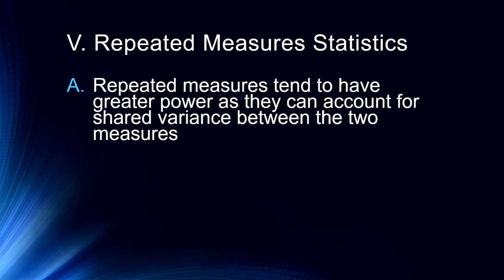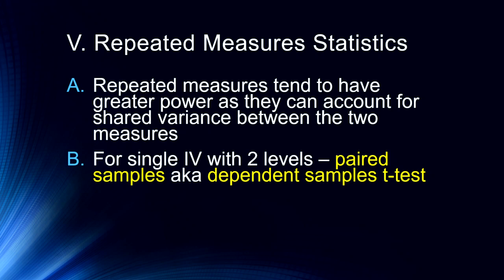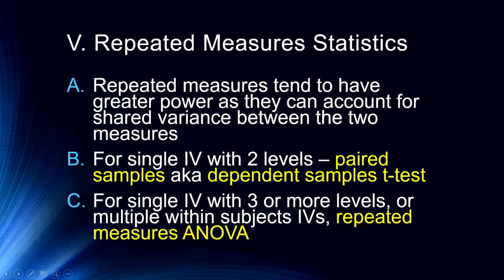For statistics in repeated measures designs, repeated measures statistics tend to have greater power because they account for shared variance between the two measures. For a single independent variable with two levels, we use a paired samples t-test — also called dependent samples or matched samples t-test — which has increased statistical power by subtracting out the covariance of the two groups. For a single independent variable with three or more levels, or multiple within-subjects independent variables, we use repeated measures analysis of variance. These have somewhat more statistical power than their between-subjects counterparts. Next up will be a discussion of between-subjects designs.